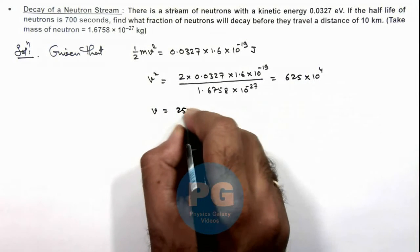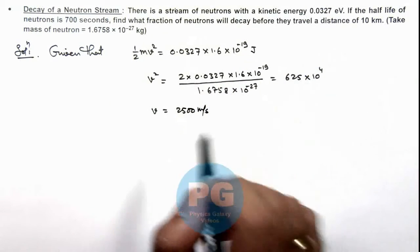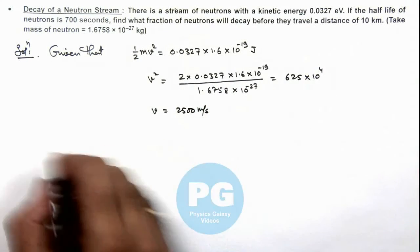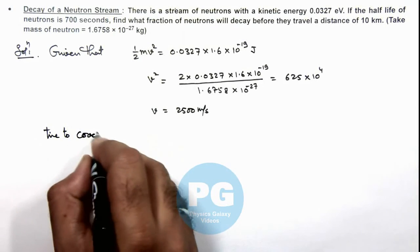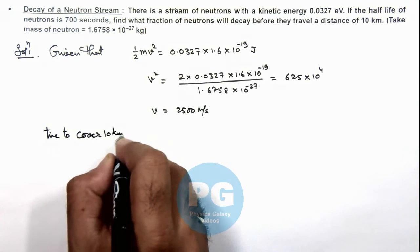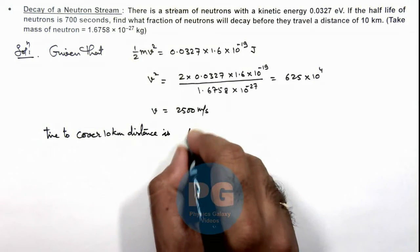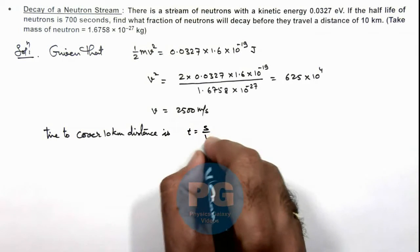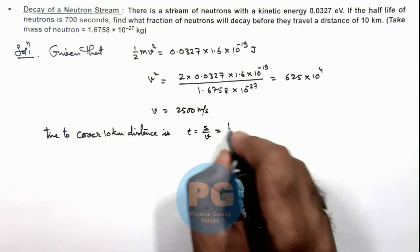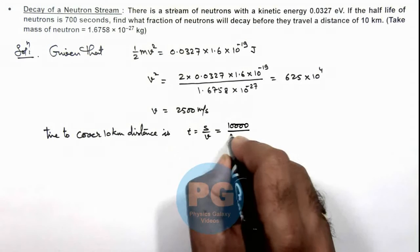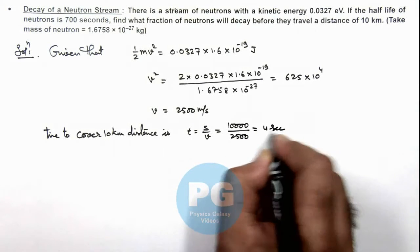We are getting the square root of this value which is 2500 meters per second. That is the speed with which neutrons are moving in the stream. So if we calculate the time to cover 10 kilometer distance, we can calculate this time as s by v. So the distance is 10,000 divided by the speed 2500, which equals 4 seconds.